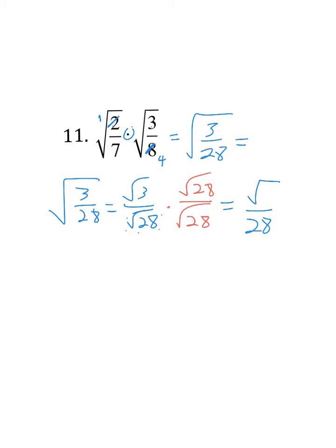And the top is going to be square root of 3 times 28. 28 times 3. Don't have a calculator handy, it's all good. 8 times 3 is 24. You get 84. So I have the square root of 84 over 28.